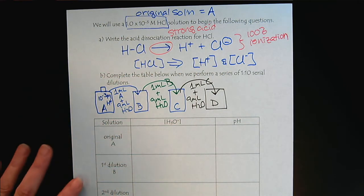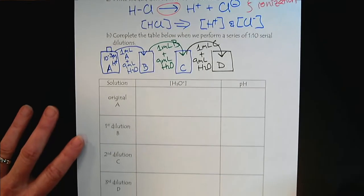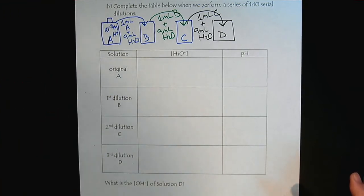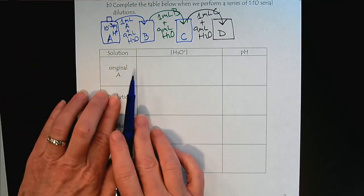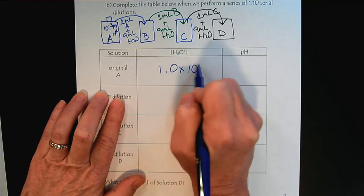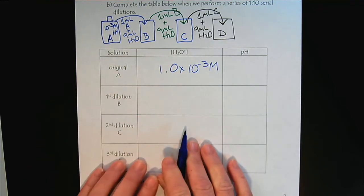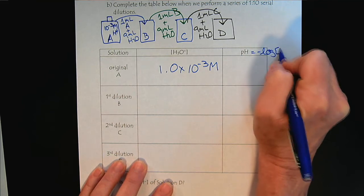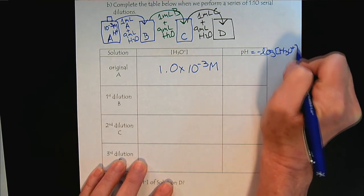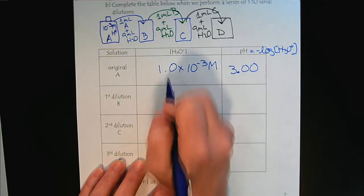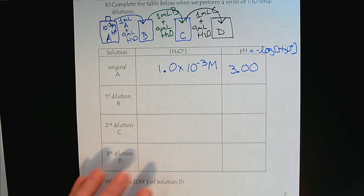So now that we understand the dilution steps, we will perform the calculations. Well, the original solution, we already know the concentration. It's 1.0 times 10 to the minus 3 molar. And so of course for the pH, we just simply take the negative log of H3O+. So the pH would be 3.00. And if you're wondering about the sig figs, please refer to the pH tutorial.